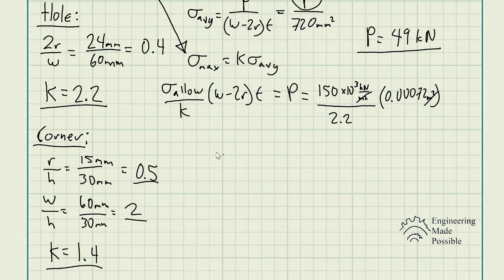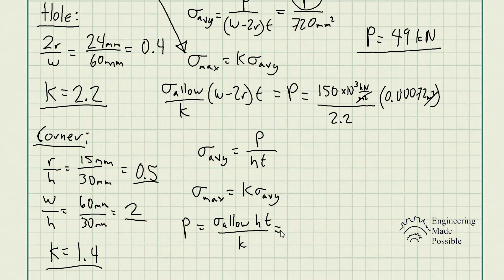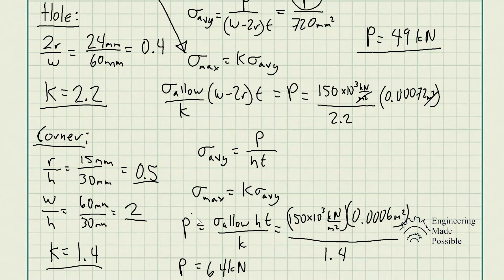For the corner, the average stress is the load P divided by the cross-sectional area H × T. Using the same equation — maximum stress equals K times average stress — and setting it equal to the allowable stress, we solve for P: P = (σ_allowable × H × T) / K. This gives P = 64 kilonewtons for the corner stress concentration.